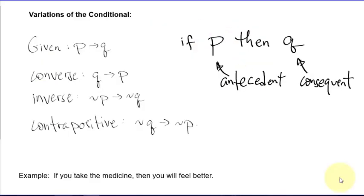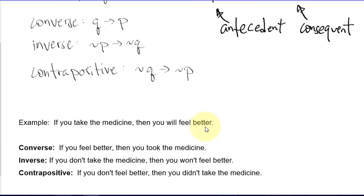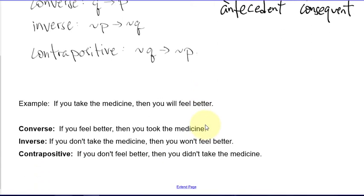Let's look at variations of the conditional. Given 'if P then Q,' the first part is the antecedent and the last part is the consequent. The converse switches antecedent and consequent. The inverse negates both antecedent and consequent. The contrapositive both switches and negates them. For example: 'If you take the medicine, then you will feel better' — P is 'you take the medicine,' Q is 'you will feel better.'